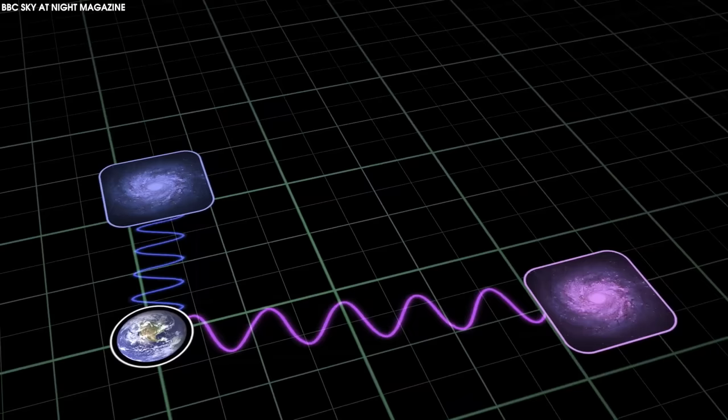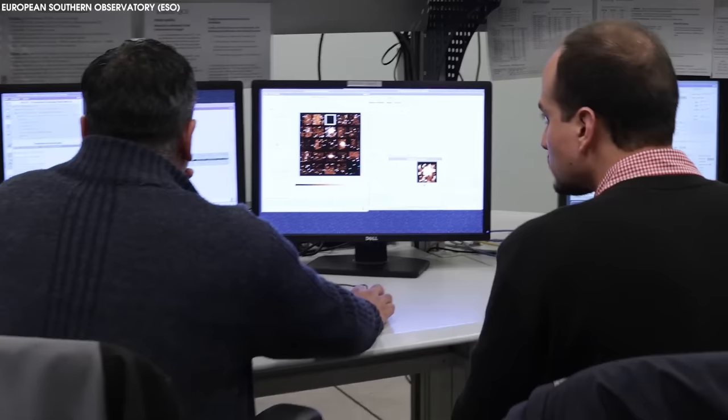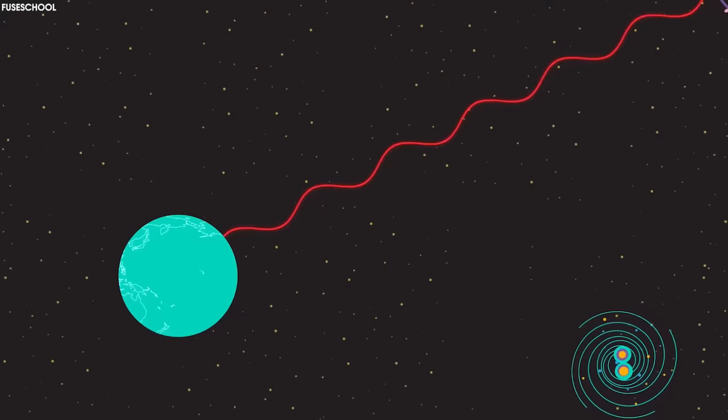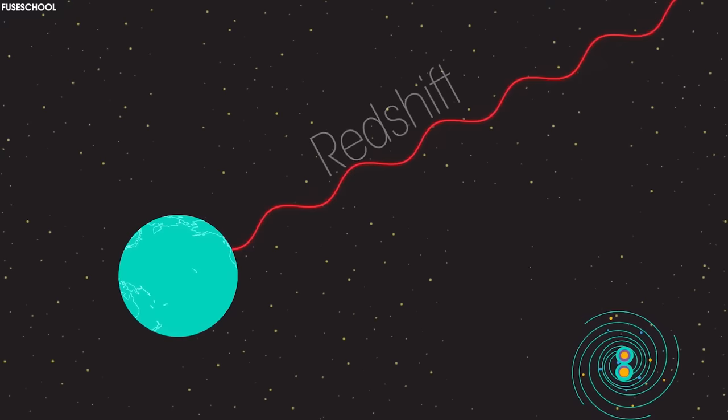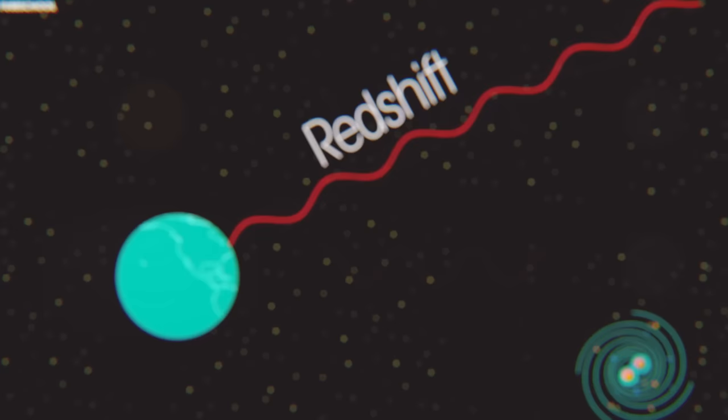As light travels through an expanding cosmos, it's stretched to longer, redder wavelengths. Astronomers can measure the extent of that stretch, called redshift, which can be used to calculate an object's distance. Higher redshifts mean an object is farther away.